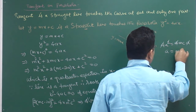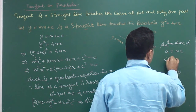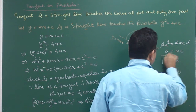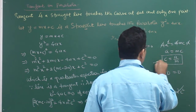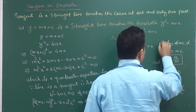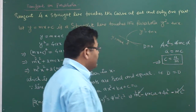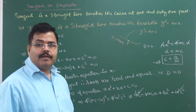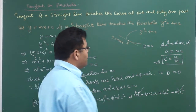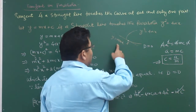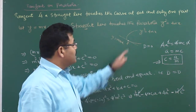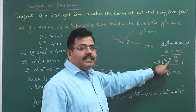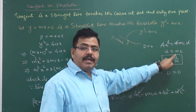After simplification, we get a = mc, or c = a/m. This is the condition of tangency: a line y = mx + c will touch the parabola y² = 4ax if and only if c = a/m.